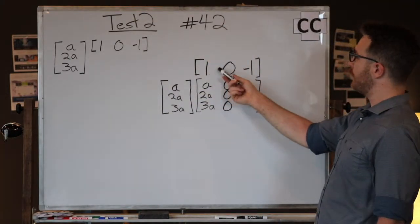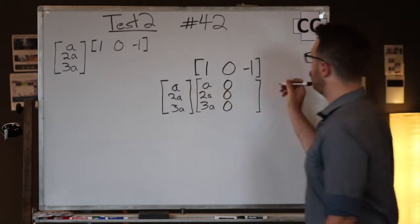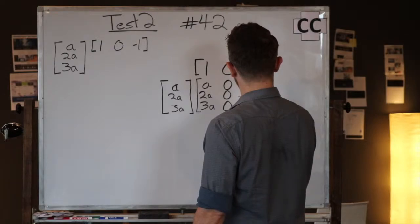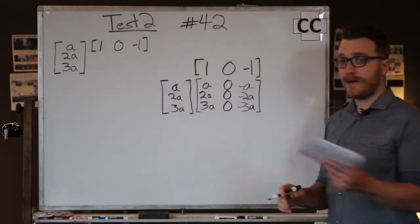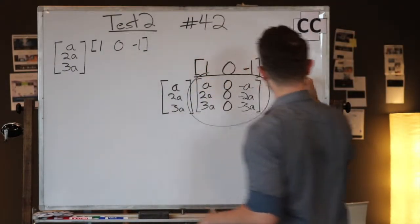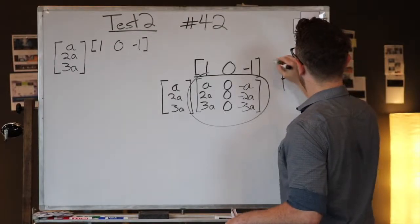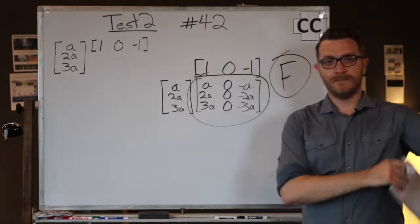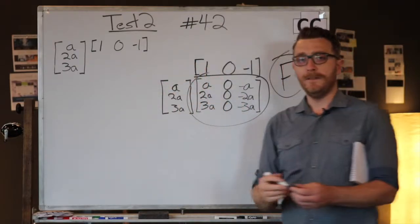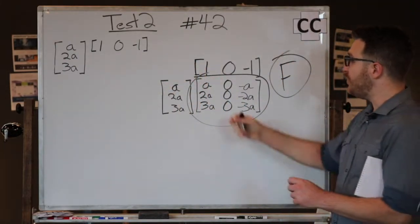Now this one is very similar to the first one. I have negative 1 times each row. I'm going to do negative a, negative 2a, and negative 3a for all of these. Now if you look at your answer choices, you'll find this new matrix is answer letter F. Pretty simple.